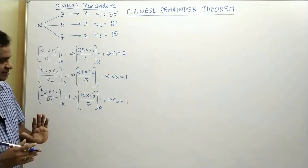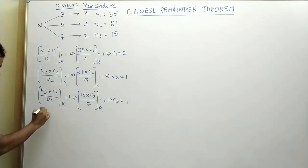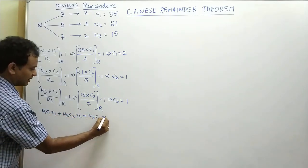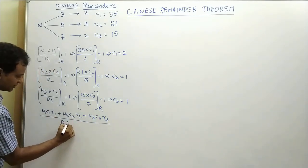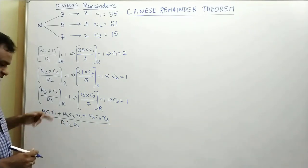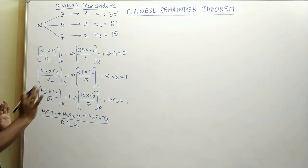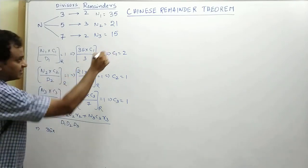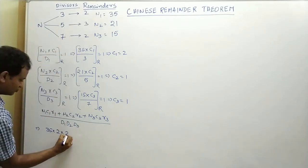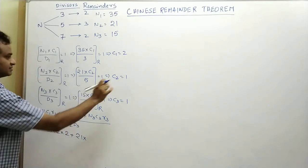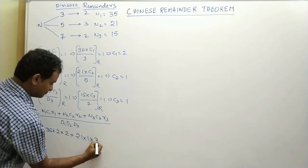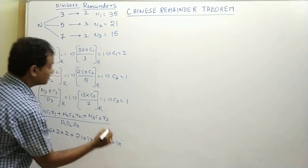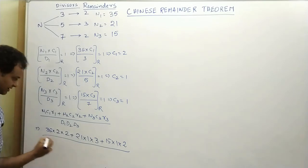Once we have found c1, c2, and c3, we can find the answer directly using the formula: (n1·c1·r1 + n2·c2·r2 + n3·c3·r3) divided by (d1·d2·d3). We can remember this as NCR — like Delhi's National Capital Region. Substituting: n1 = 35, c1 = 2, r1 = 2; plus n2 = 21, c2 = 1, r2 = 3; plus n3 = 15, c3 = 1, r3 = 2; all divided by d1·d2·d3 = 105.